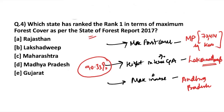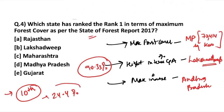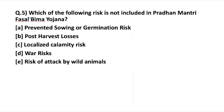Talking about India as a whole, India is ranked at the 10th position in the world, with 24.4% of its land area under forest and tree cover.